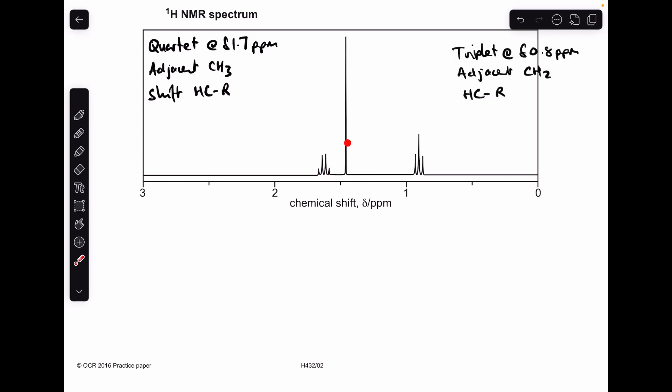I'm going to skip this tall signal at the moment, I'm going to go straight to this one. So this is a triplet, it's at roughly delta 0.8 ppm. The triplet tells us that it's adjacent to a CH2 group. And we've got another H to C to R environment.